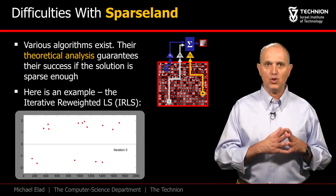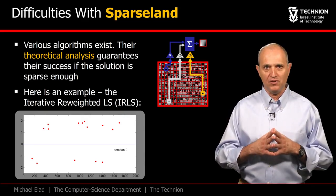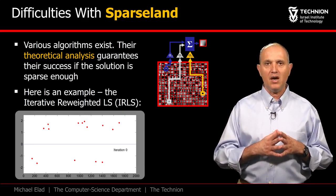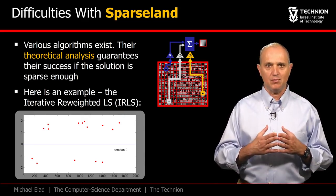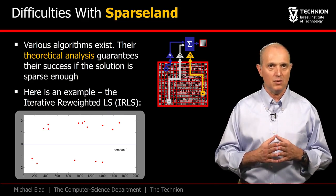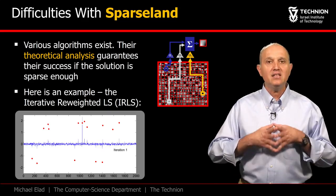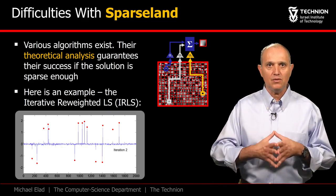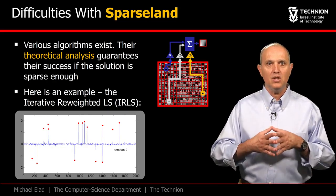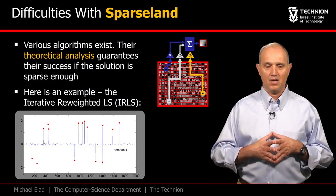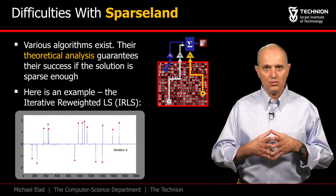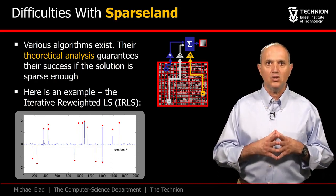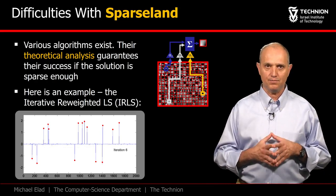This graph shows the true set of 15 coefficients as red points. The IRLS is initialized by assuming that all the coefficients are zeros. As it iterates, it gets closer and closer to the true decomposition. And if continued, it will lead, in this case, to a perfect and accurate solution.